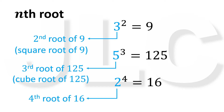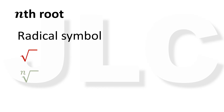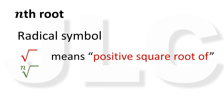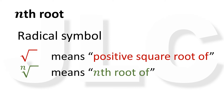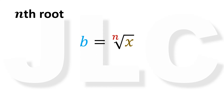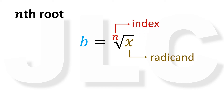We will now introduce the radical symbol, or radical sign, which indicates the nth root. The radical symbol has two types: one means the positive square root, and the other means the nth root. Using this symbol, we can write: if b is an nth root of x, then b equals the nth root of x. The number inside the radical sign is called the radicand, n is called the index, and the result b is called the nth root.